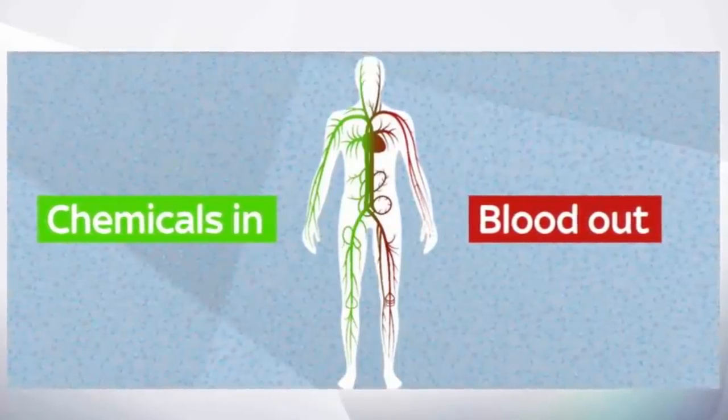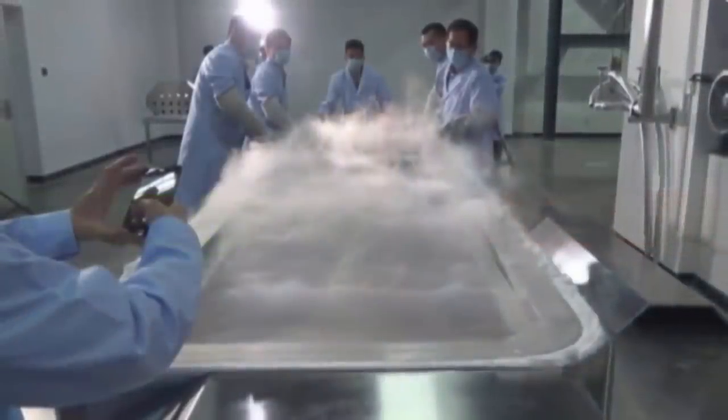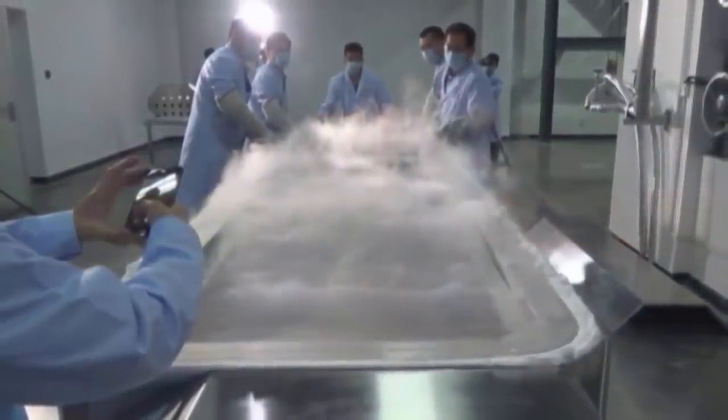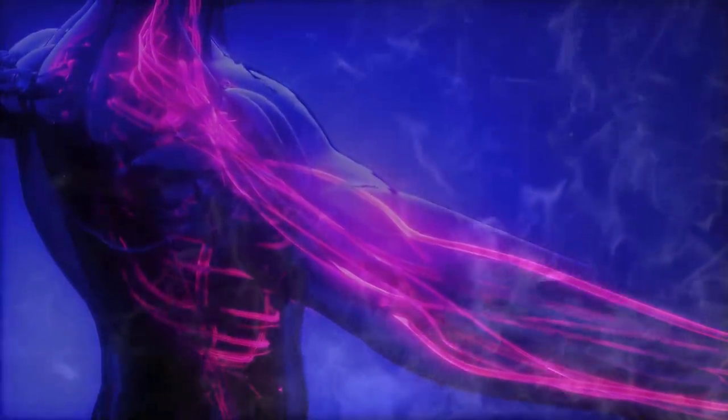Then ice-resistant chemicals are pumped into the body, taking the place of water in the blood. That way, in the next step, when the body or brain is cooled to well below freezing using nitrogen gas, it hardens without forming cell-damaging ice.